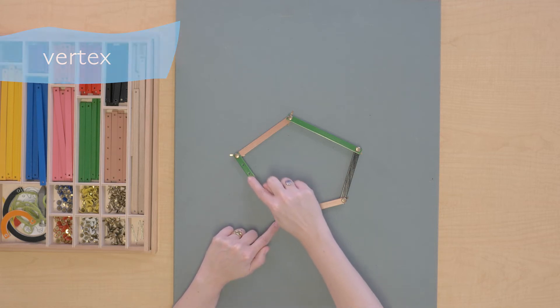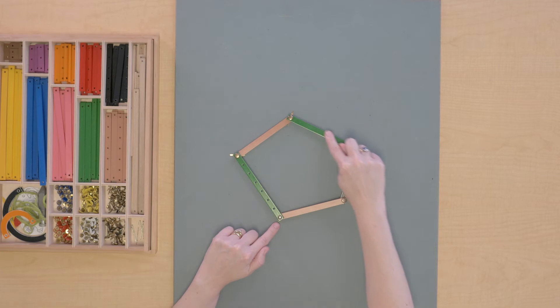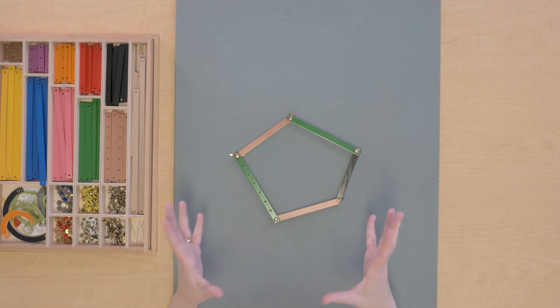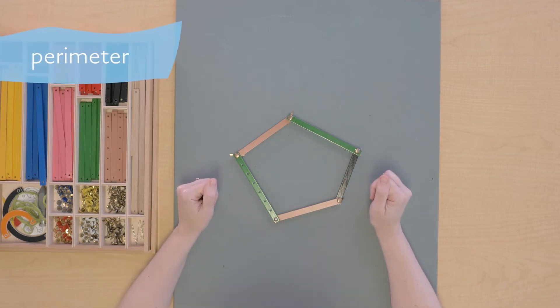Now if we look at all of this outer boundary of the polygon, all these sides that bound it and create it, that's called the perimeter of the polygon.